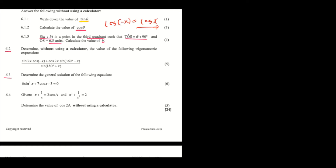Now going to 6.3, where we are having a general solution and we are asked to solve it. When you solve a general solution you are finding the angle, in this case the angle of x. The first step: write 6.3 — you have 6 sine squared x plus 7 cos x minus 3 equals 0.